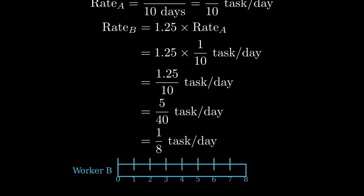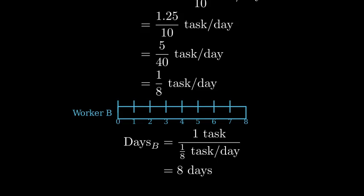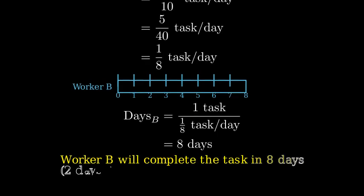To find how many days B will take, we know that if B completes one-eighth of the task per day, they will complete the entire task in eight days. Therefore, Worker B will complete the task in eight days, two days faster than Worker A.